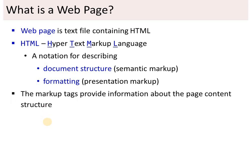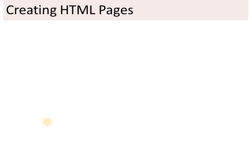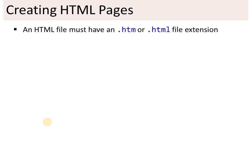HTML tags provide information about page content and structure. For example, the P tag is for paragraph, so the P tag provides information that this page contains a paragraph. Now whenever you create an HTML page, your HTML file must have a .htm or .html file extension.